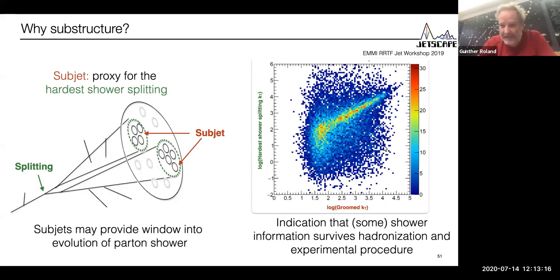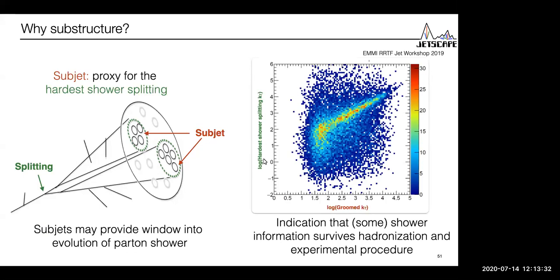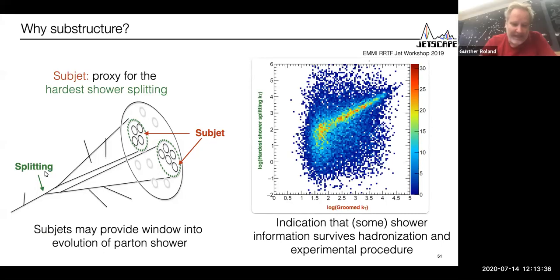Here's a study from a workshop last year done by Yeonji Lee and Yacine, where we look at the KT between the two subjets after hadronization and after underlying event subtraction, and compare that to the hardest splitting KT in the parton history. This is a final state observable, this is invisible in the experiment. You see there's a lot of noise but there is clear correlation, in particular if you go to harder splits. Whether this correlation fully survives detector effects remains to be studied.